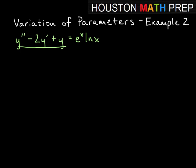Looking at the left hand side here, the auxiliary equation is m squared minus 2m plus 1 equals 0. Factoring here we're going to get m minus 1, m minus 1. So we get repeated real roots here, m equals 1 twice.